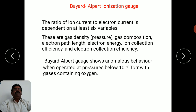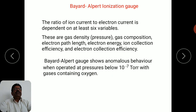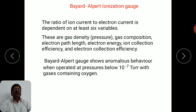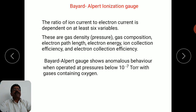There are also some limitations of the Bayard-Alpert ionization gauge. It shows anomalous behavior when operated at pressures below 10 raised to minus 7 torr with gases containing oxygen. When oxygen is present inside the chamber and you try to measure pressures below 10 raised to minus 7 torr, there will be non-linear or anomalous behavior.